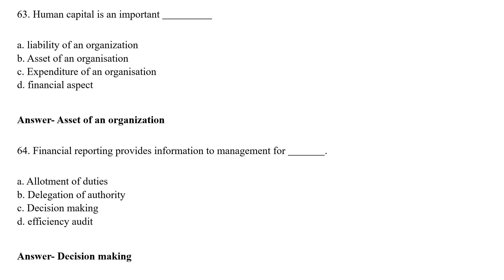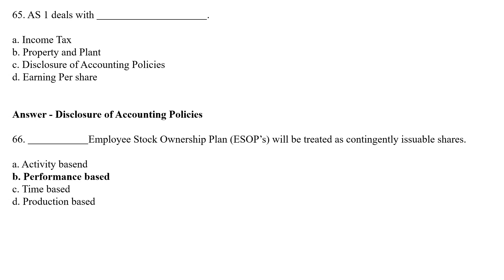Financial reporting provides information to management for allotment of duty, delegation of authority, and decision making. The correct answer is Option C — Decision Making. Financial reporting provides information to management for decision making.